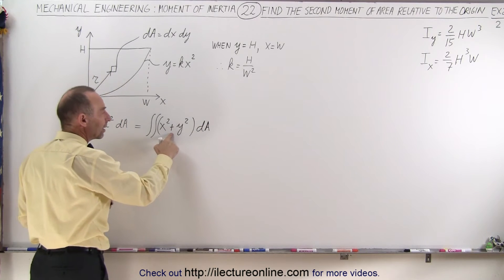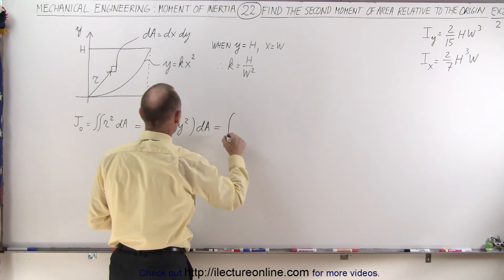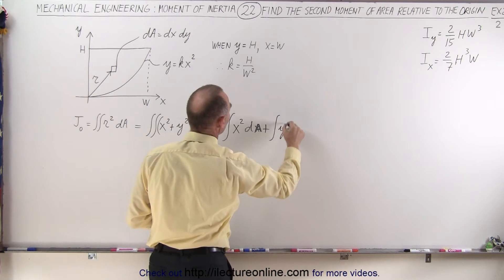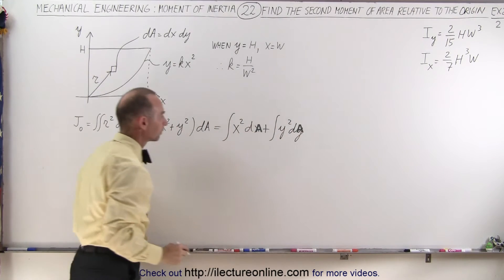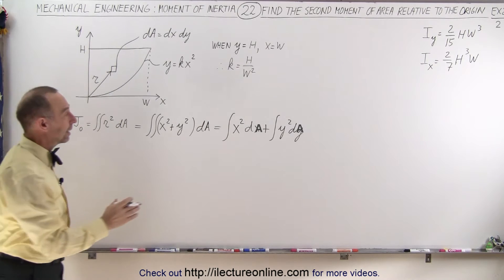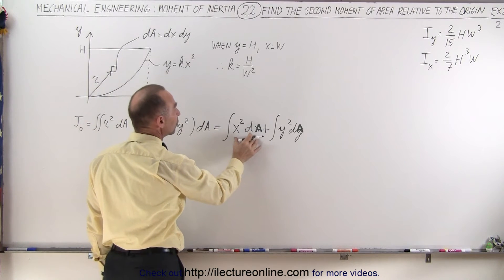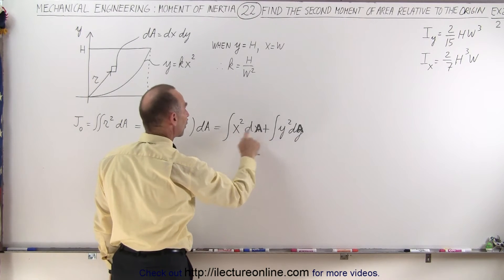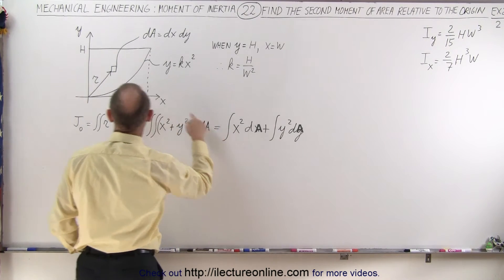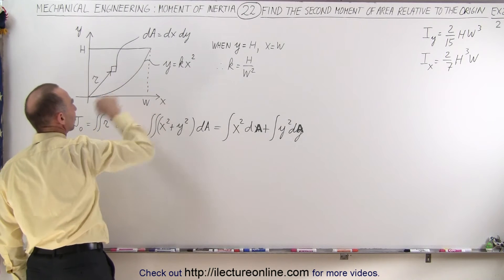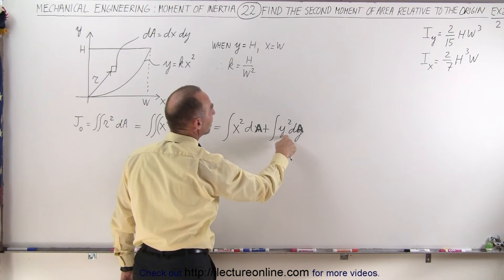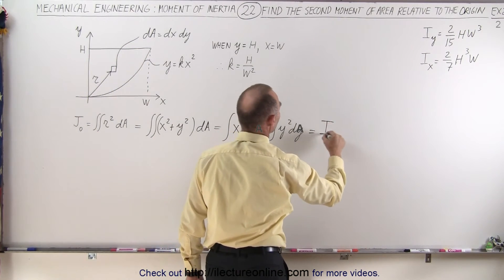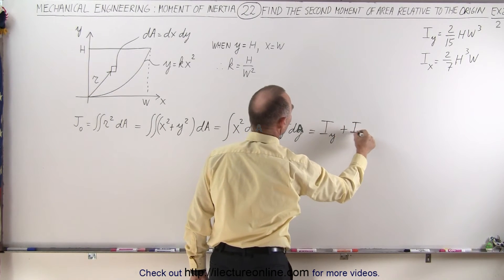And then we can actually separate this, so this can now be written as the integral of x-squared times dA, plus the integral of y-squared times dA. Now, notice that this here really is the second moment of area relative to the x-axis, and this is the second moment of area relative—or I should, I'll take that back. This is the second moment of area relative to the y-axis, because we integrate over the x-direction, and this is the second moment of area relative to the x-axis, because we're going to be integrating in this direction. So this really becomes i-sub-y plus i-sub-x.